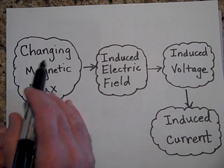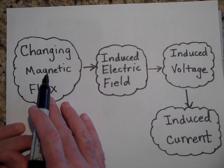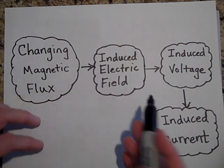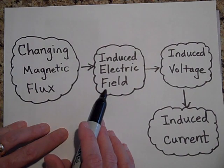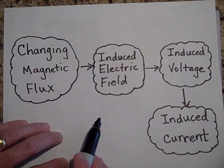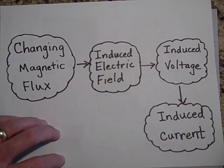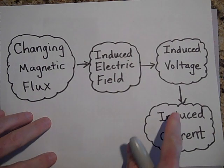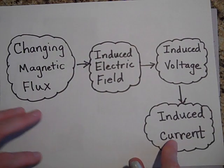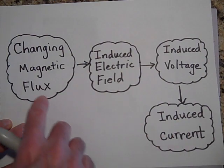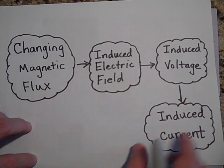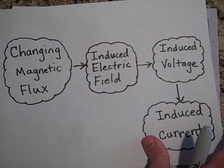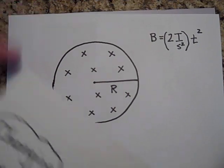By changing the magnetic flux in an area, they all happen at the same time, but I'd like you to think of it this way: first, you induce an electric field around that area. That induced electric field is what causes the induced voltage, and then it's the voltage that — if you have a wire in there with a complete circuit — gives you current. So: the changing magnetic field induces an electric field, which gives you the voltage, which can sometimes give you current if you have a complete circuit.